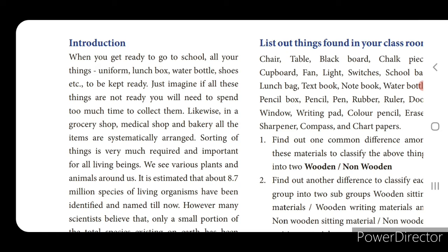Living things have specific characteristics — they can breathe, they can move, they can grow. Non-living things cannot move, cannot grow, and cannot breathe. The things which are present on the earth are classified into two things: living things and non-living things.